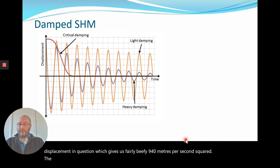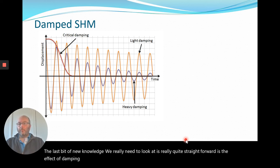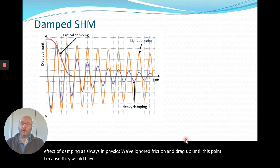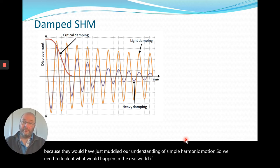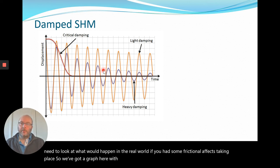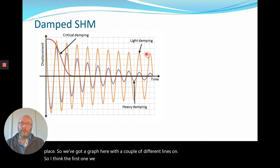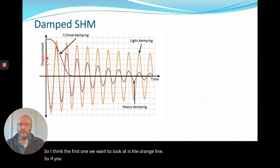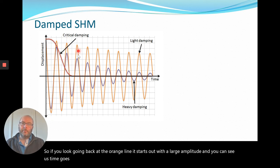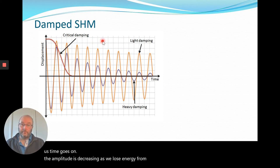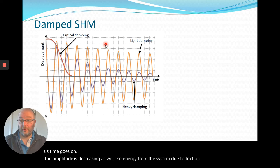The last bit of new knowledge is the effect of damping. As always in physics, we've ignored friction and drag up until this point. We need to look at what would happen in the real world with frictional effects. Looking at a graph with a couple of different lines: the orange line starts with a large amplitude and as time goes on the amplitude decreases as we lose energy from the system due to friction and damping.